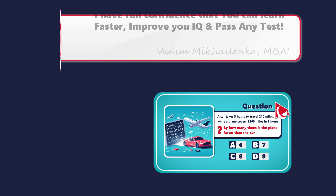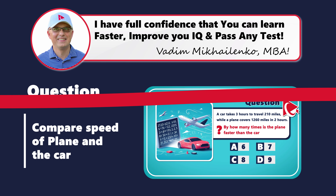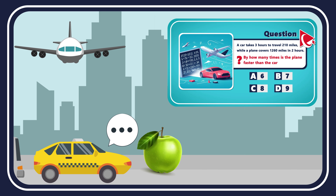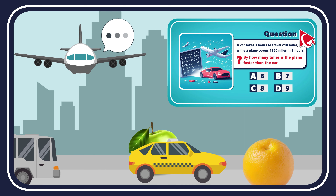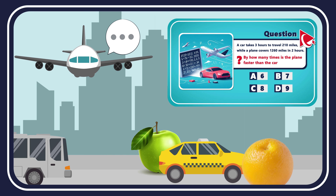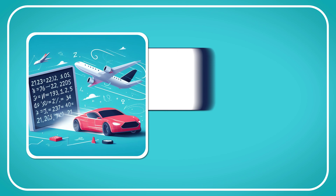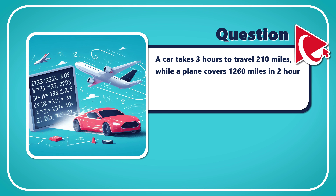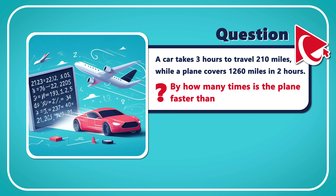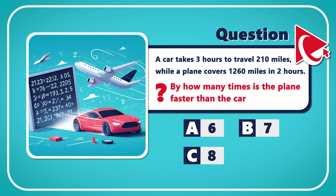Solving this challenge reminded me of an old joke: a car said to a plane, 'They say comparing our speeds is like comparing apples to oranges,' and the plane's response was, 'Well, at least I'm flying high while you're down there dealing with traffic jams.' With that in mind, here's the problem: a car takes 3 hours to travel 210 miles while a plane covers 1,260 miles in 2 hours. By how many times is the plane faster than the car? Choices: A: 6 times, B: 7 times, C: 8 times, D: 9 times.